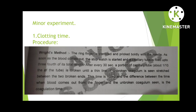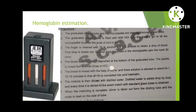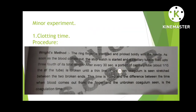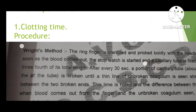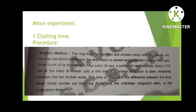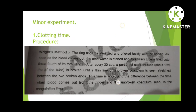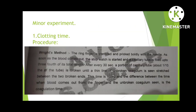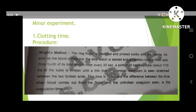Now let's discuss the minor experiments. Clotting time: the ring finger is sterilized and pricked boldly with a needle. As soon as blood comes out, the stopwatch is started and capillary tubes are used.